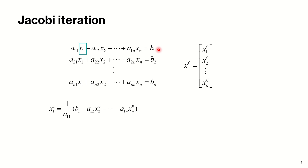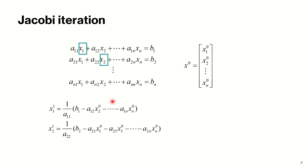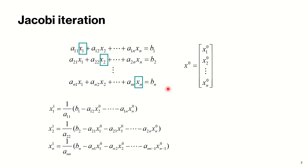We solve equation 1 for x1, leaving x1 on the left side and taking everything to the right side. Similarly, for the second equation, the coefficient of x2 must be greater than or equal to the sum of the remaining absolute coefficients, so |a22| ≥ |a21| + |a23| + ... + |a2n|. For the last equation, |ann| must be greater than or equal to the sum of the remaining absolute coefficients, and then we solve that equation for xn.